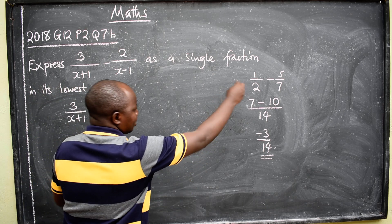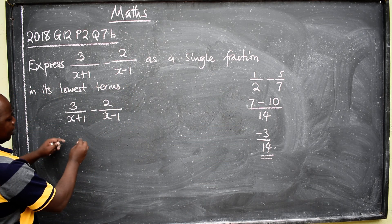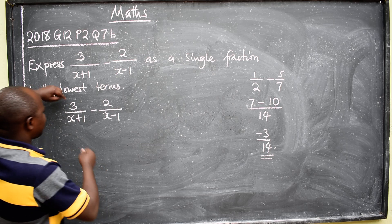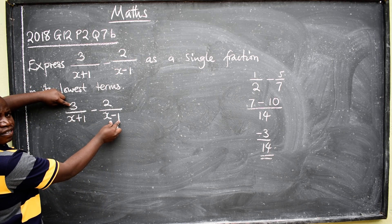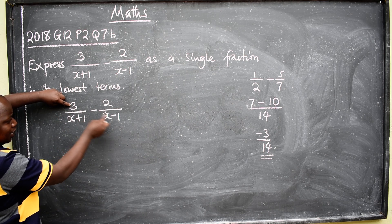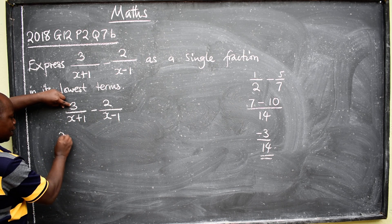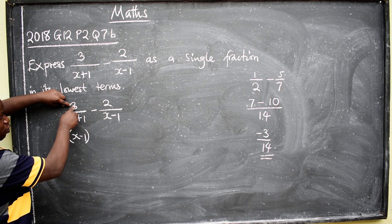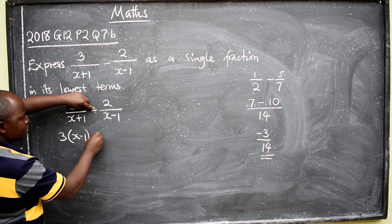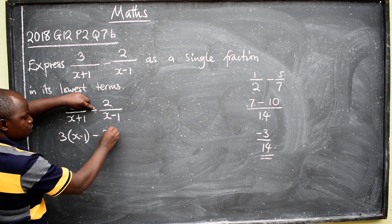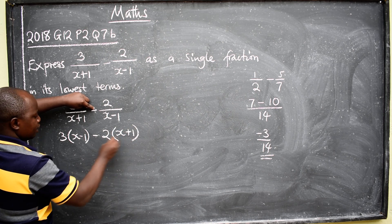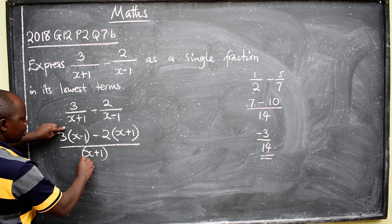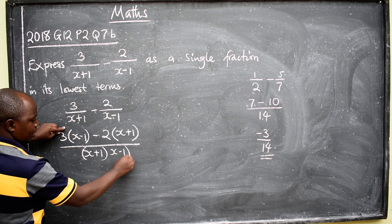So, using this concept here, we are going to say, instead of saying common denominator, we can use the fastest method. You can simply say 3 times this. Please follow me very well. 3 times this denominator, so you write 3 times x minus 1. That means we have multiplied. Minus 2 times this, so it writes 2 times x plus 1 divided by this times this, x plus 1 times x minus 1.